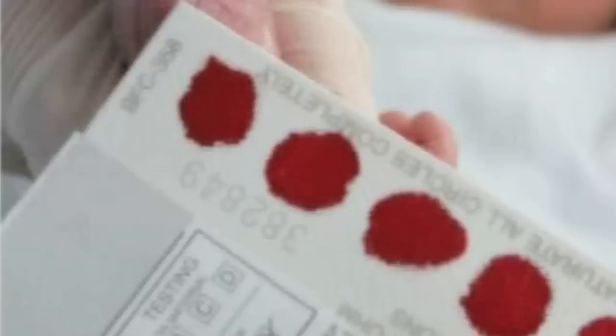This test is done on dried blood spots which are already collected from all newborn babies in the UK as part of national screening for other genetic disorders. This test is currently available in the UK but is only being used to test babies who are suspected to have SCID, but with more experience and more evidence it may become part of newborn screening in the near future.